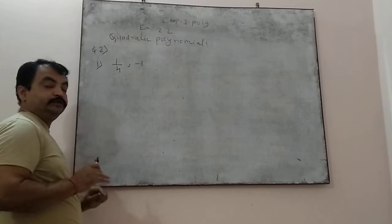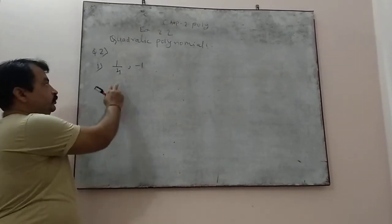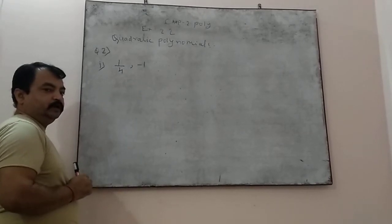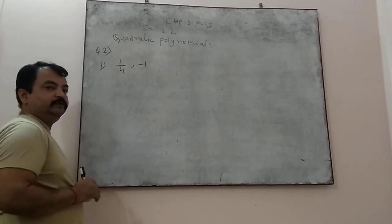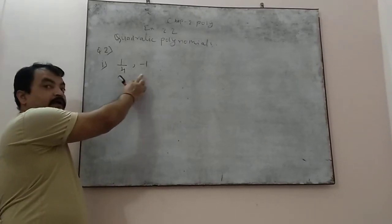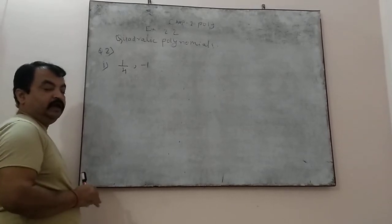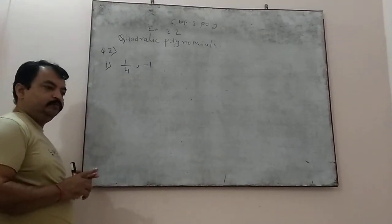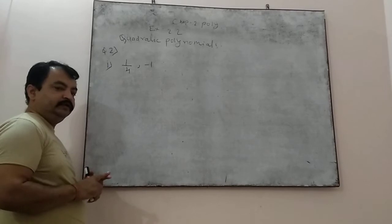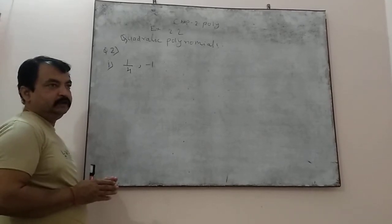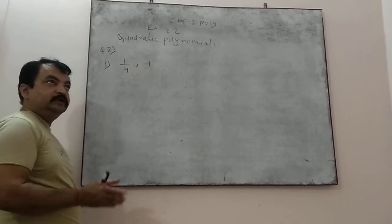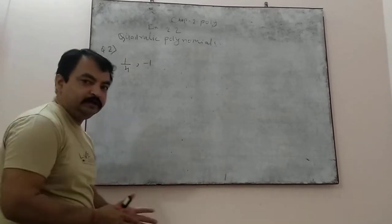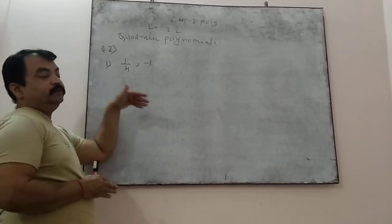In question number 2, there is a reverse question. Here, the sum of zeros and the product of zeros are given — that is alpha plus beta and alpha into beta — and we have to make the quadratic polynomial. In question 1, the polynomial was given and we found alpha and beta. Here it is the reverse.